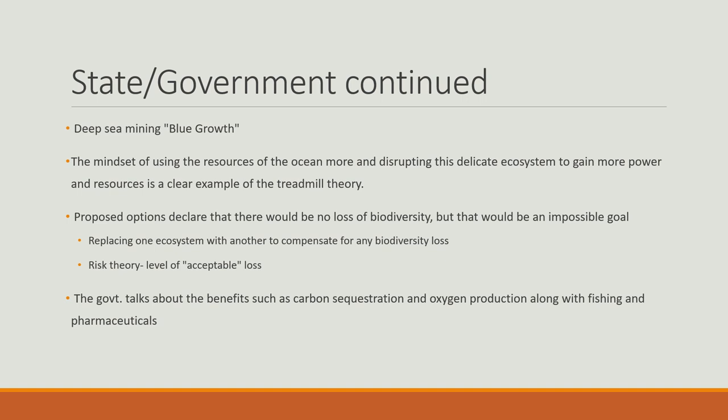Deep sea mining, or blue growth, is another area where the government is involved. The mindset of using the ocean's resources more and disrupting this delicate ecosystem is to gain more power and resources — it's another clear example of the treadmill theory. The proposed options declare there would be no loss of biodiversity, but that would be an impossible goal. It's more about replacing one ecosystem with another to compensate for biodiversity loss, and this also flows into risk theory of what is an acceptable loss.